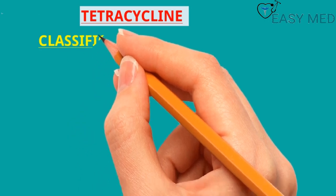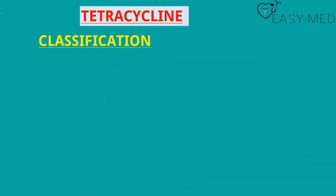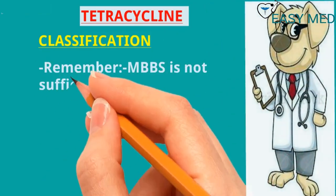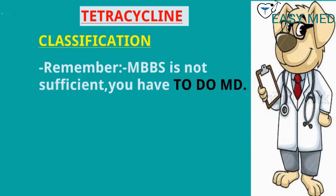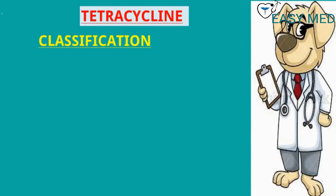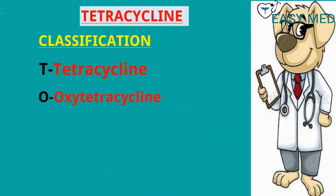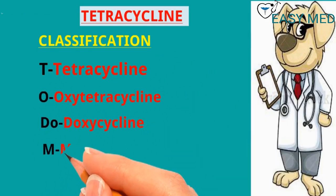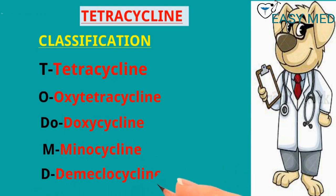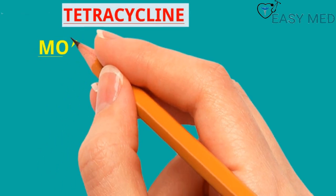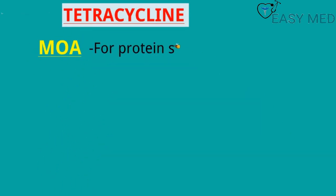Classification of tetracycline: remember 'MBBS is not sufficient, so you have to do MD' — D for doxycycline, O for oxytetracycline, DO for doxycycline, M for minocycline, D for demeclocycline.